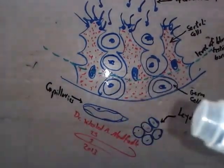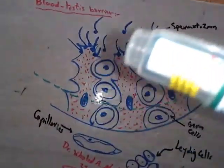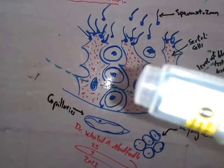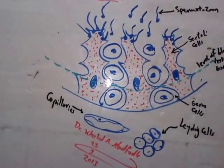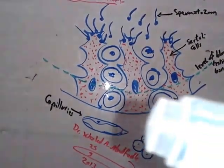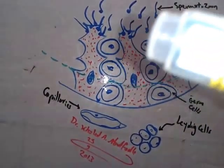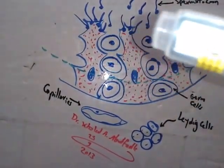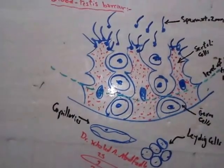This is to avoid destruction of the germ cells and sperm inside the seminiferous tubules. Also, it prevents the waste products of the process of spermatogenesis from passing from seminiferous tubules into the capillaries in between these seminiferous tubules.